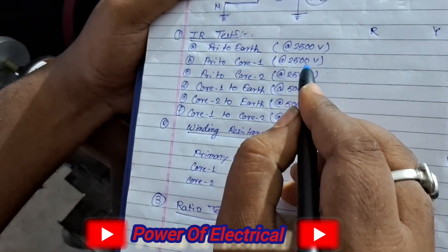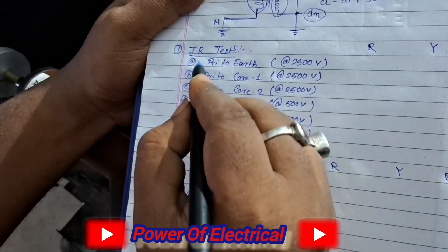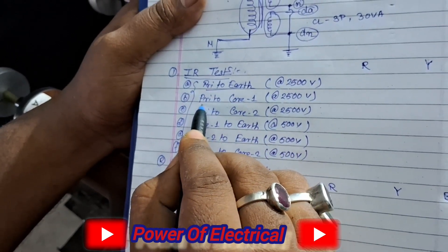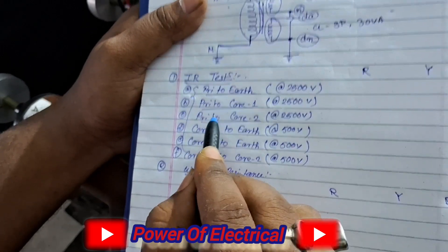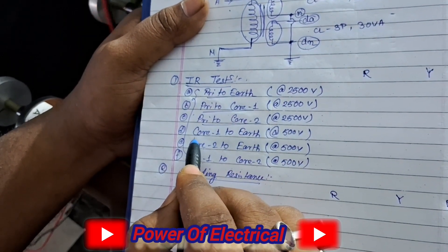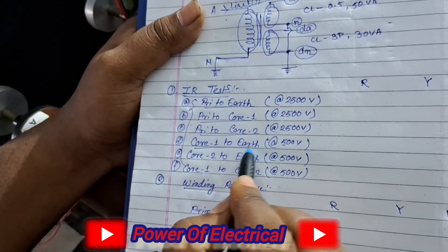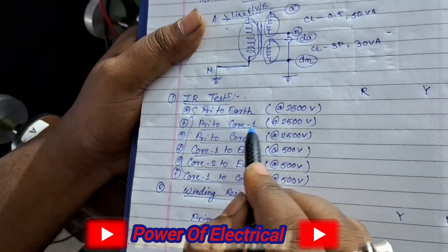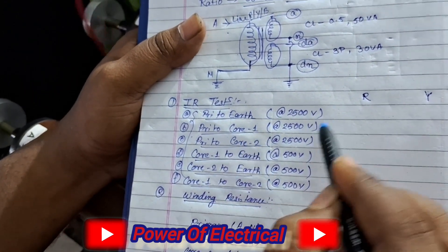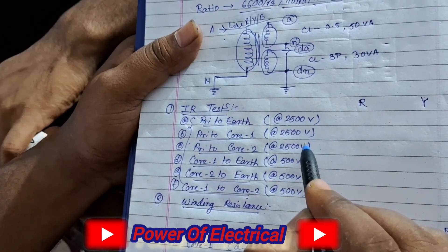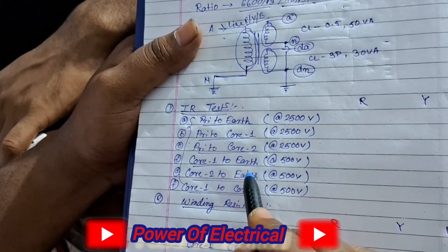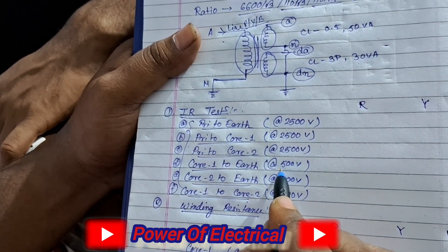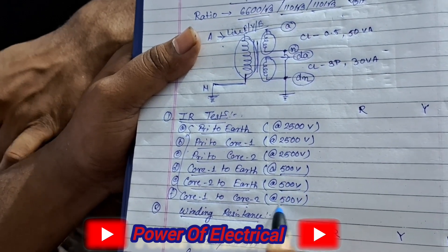For the IR test with a two-core secondary PT, there are six combinations. The first three are: primary to earth, primary to core one, and primary to core two. Then: core one to earth, core two to earth, and core one to core two. For primary to earth, primary to core one, and primary to core two, we apply 2.5 kV using a megger. For core one to earth, core two to earth, and core one to core two, we apply only 500 volt.